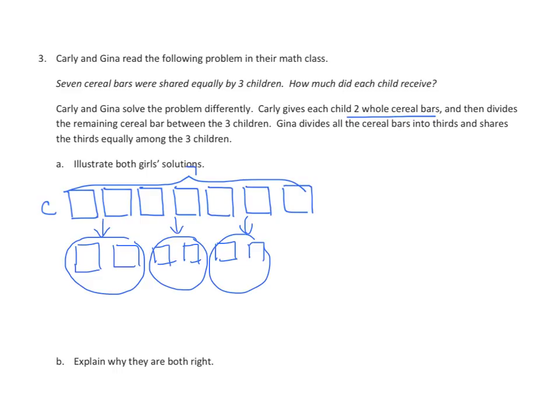We have one left over. So what did she do? She divided that into three equal parts. And each kid got one third. So each kid got two and one third.